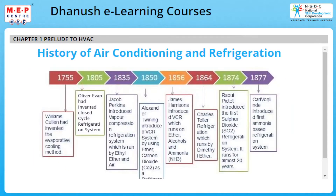In 1755, Williams Cullen invented the evaporative cooling method. In 1805, Oliver Evans invented a closed cycle refrigeration system. In 1835, Jacob Perkins introduced a vapor compression refrigeration system run by ethyl ether and air. In 1850, Alexander Twining introduced a VCR system using ether and carbon dioxide as a refrigerant. In 1856, James Harrison introduced VCR which runs on ether, alcohols and ammonia.